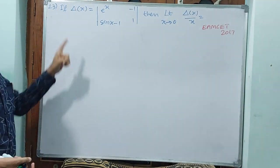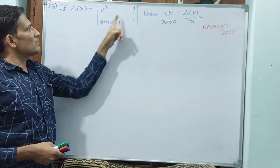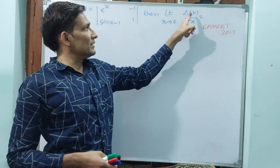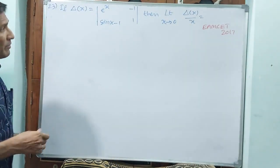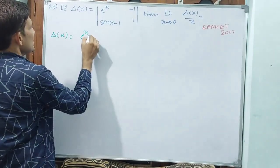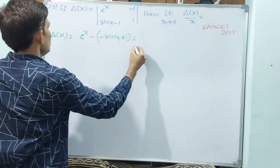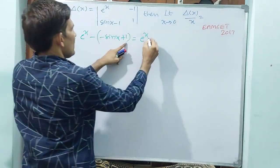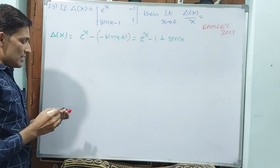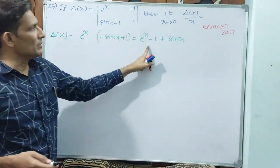Question number 23. If delta x equals the determinant with e power x minus 1 and sin x, then what is the value of limit x tends to 0 of delta x divided by x? First we find delta x. Delta x equals e power x minus sin x, simplified as e power x minus 1 plus sin x.